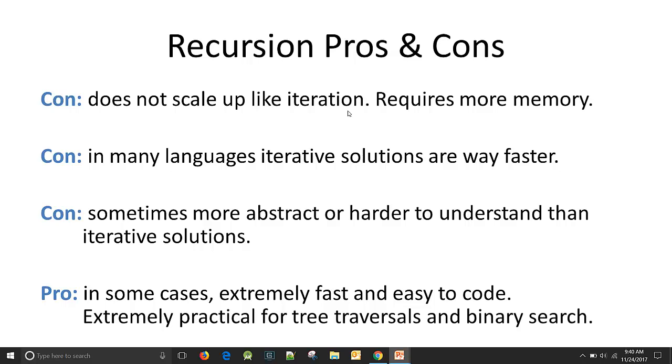And in many languages, iterative solutions are way faster, for loops. Some languages are just optimized for running for loops really fast and they do that really well, but opening function calls they do very slowly. And then another con is sometimes recursion is a little more abstract, it's harder to understand than iterative solutions in some cases. So wrapping your head around the solution sometimes can be harder in recursive solutions.